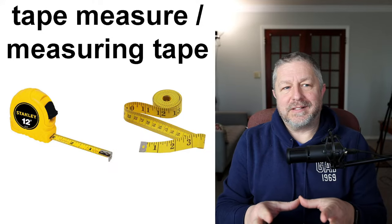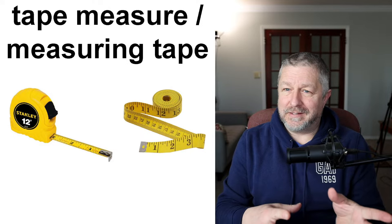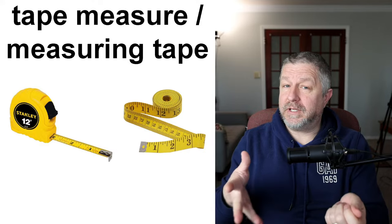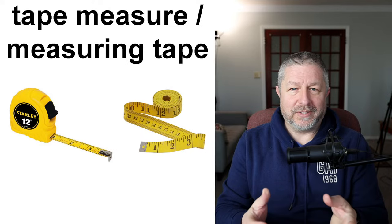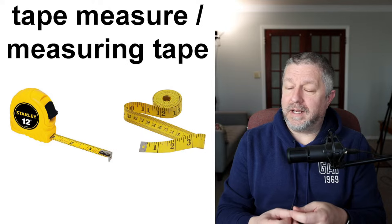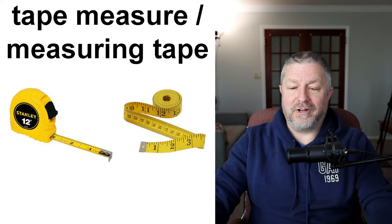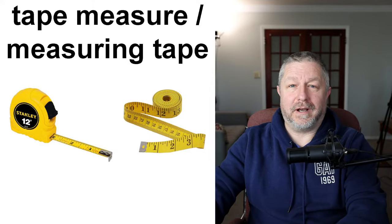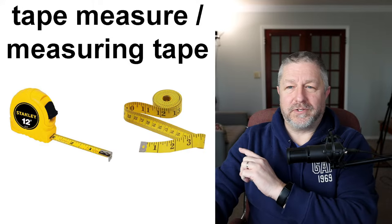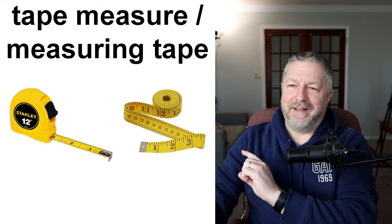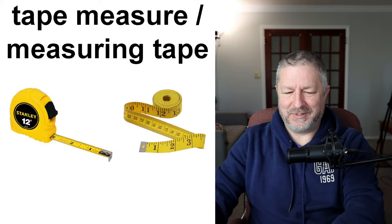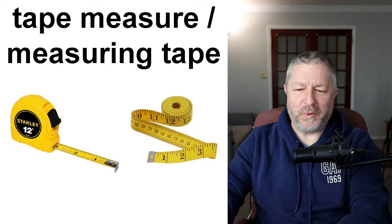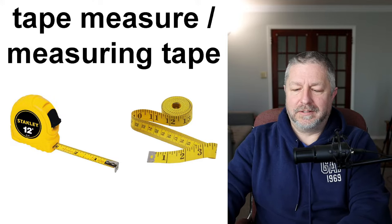We also have what are called tape measures or measuring tapes. Both names are very common. When you build something, you usually use a tape measure, especially if you need to cut something with a saw. I could say to Jen, 'Have you seen the tape measure?' or 'Have you seen the measuring tape?' — they mean the same thing. I'm not sure why we have two completely different names, but that's just how English is. I always lose my measuring tape somewhere on the farm.